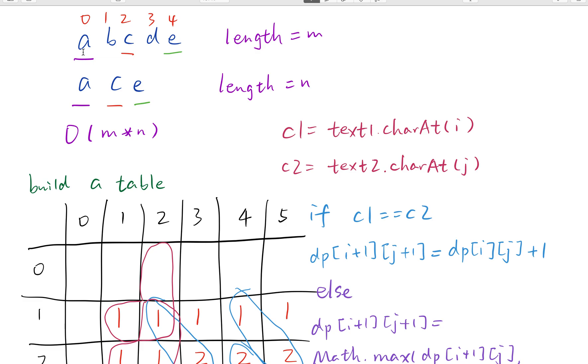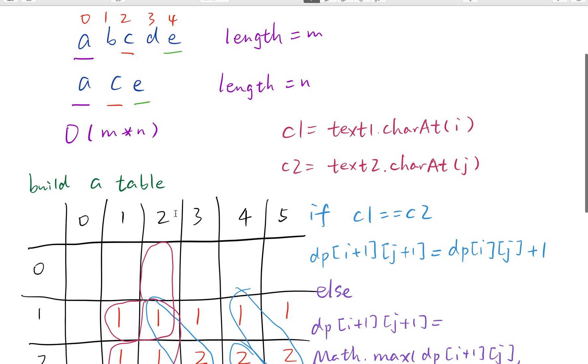So we will use two for loops actually. The outer loop iterates through text1 and the inner loop iterates through text2. So what does DP[i][j] mean? That means the longest common subsequence from the substring of text1 from index 0 to i minus 1 and the substring of text2 from index 0 to j minus 1.